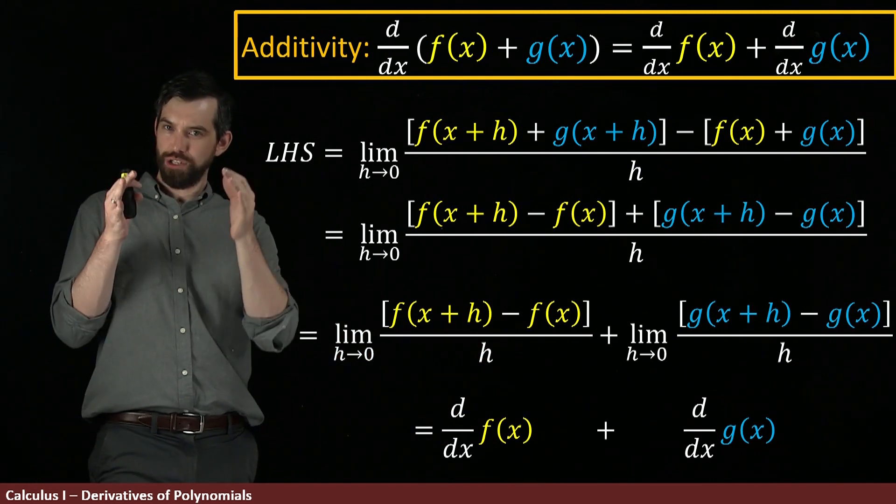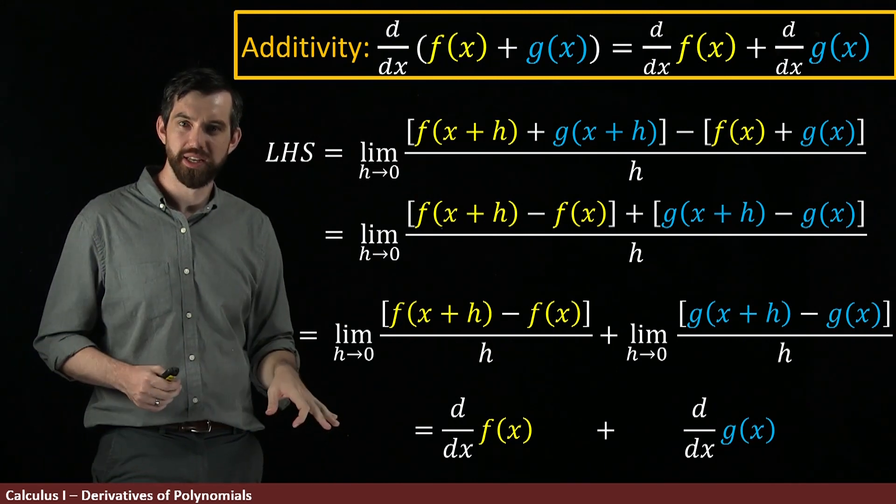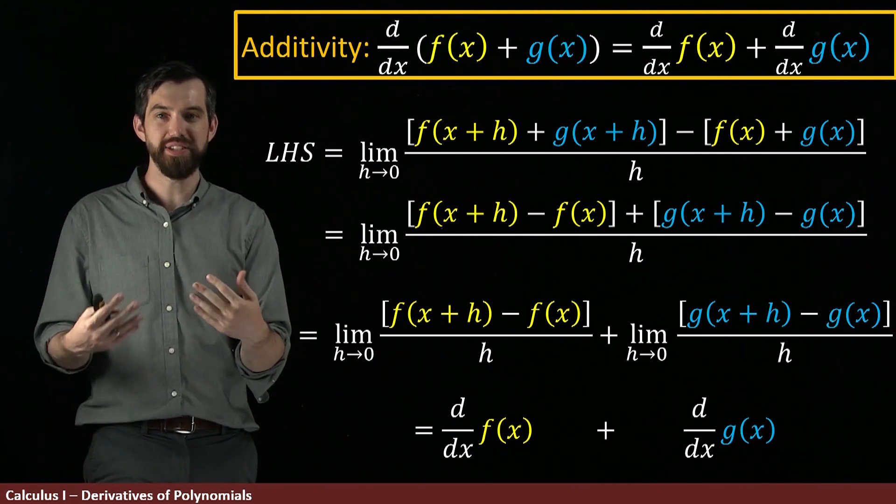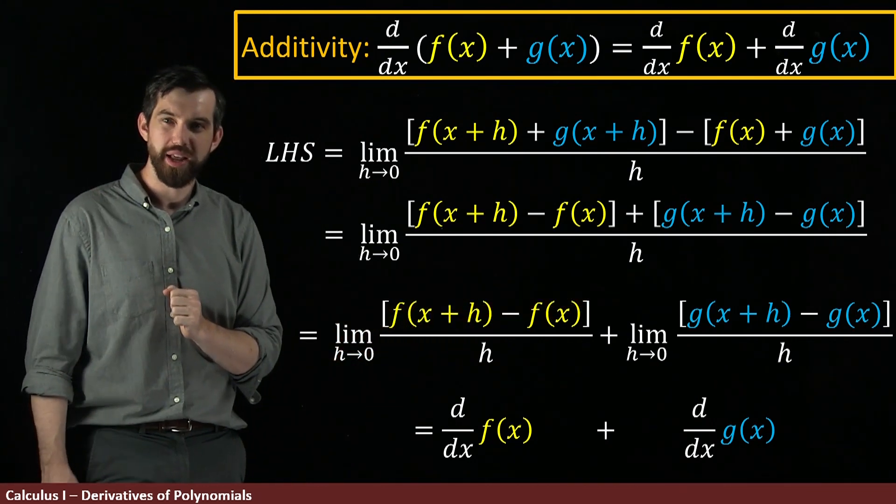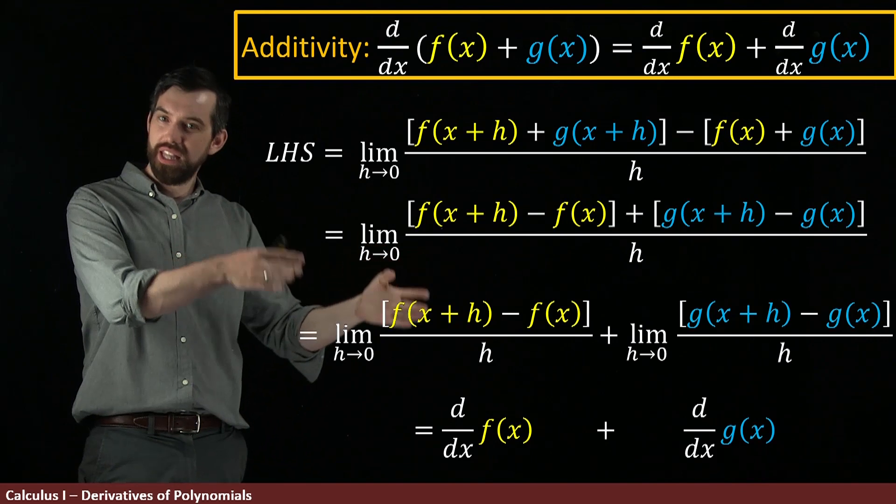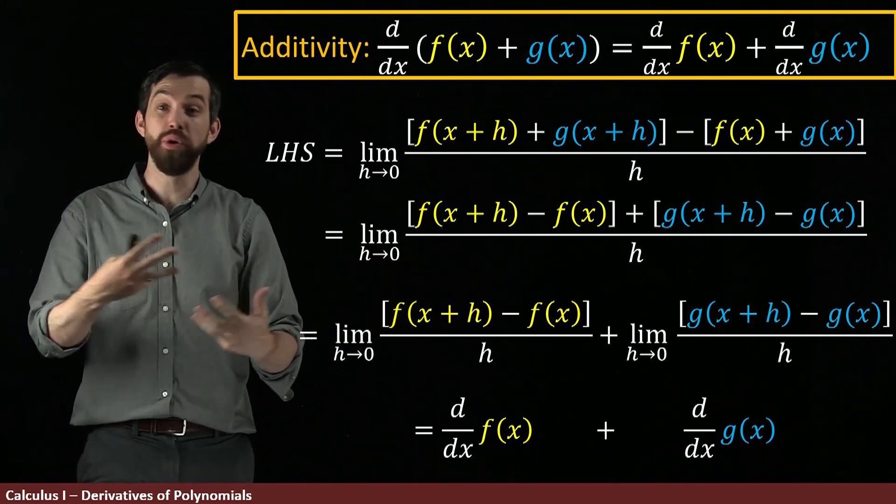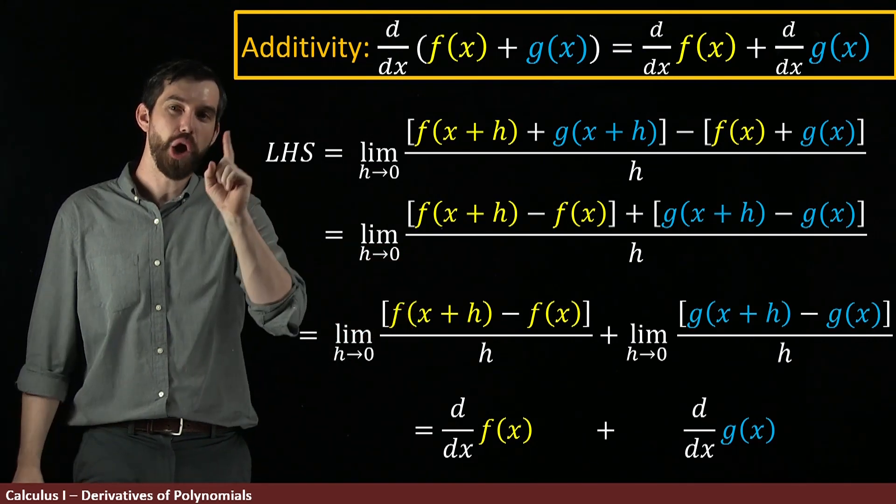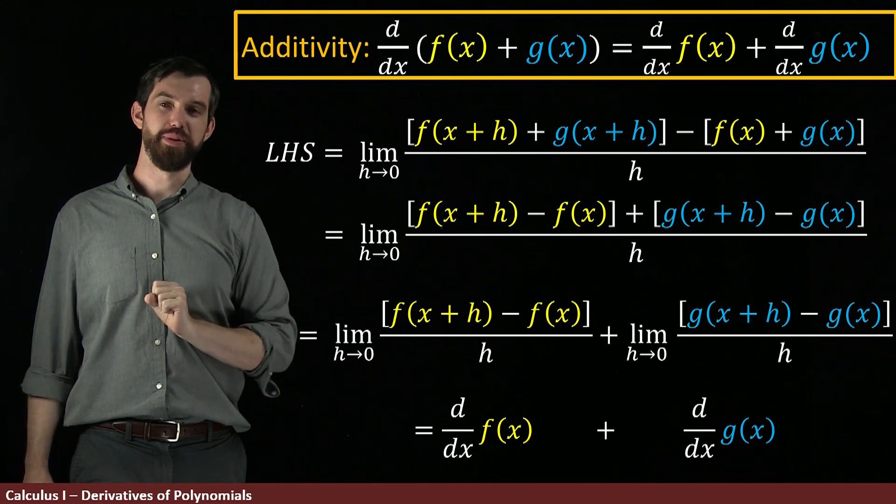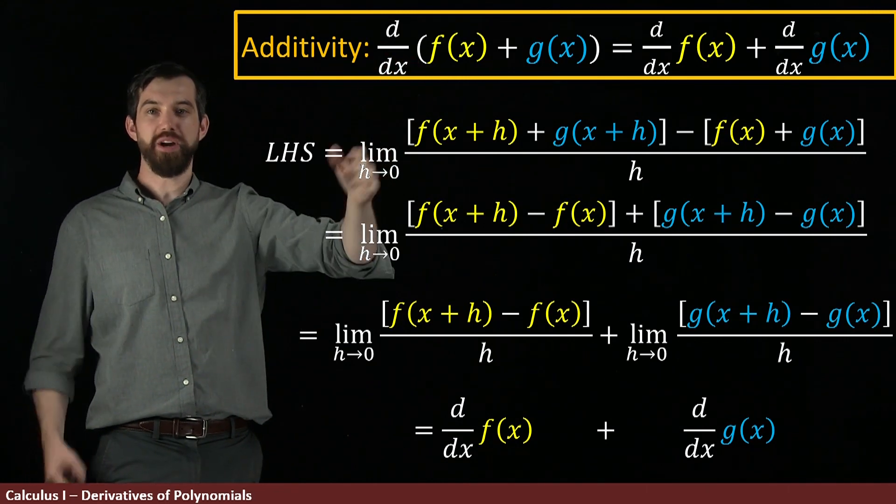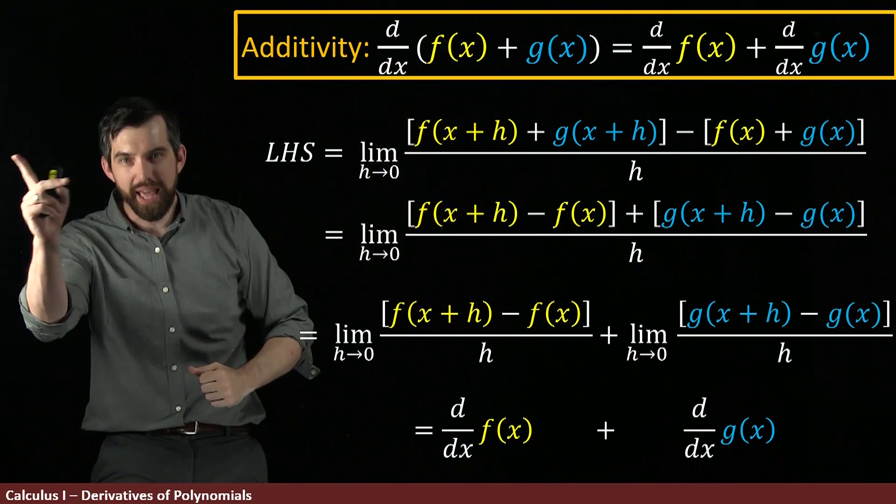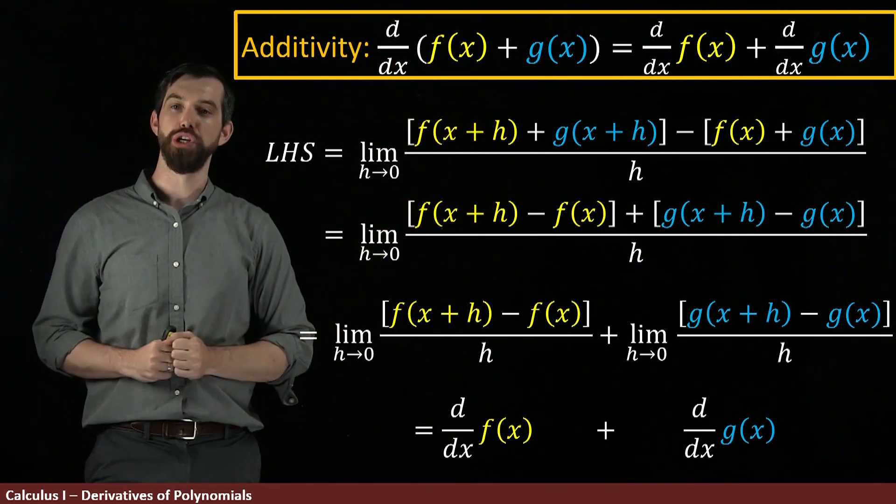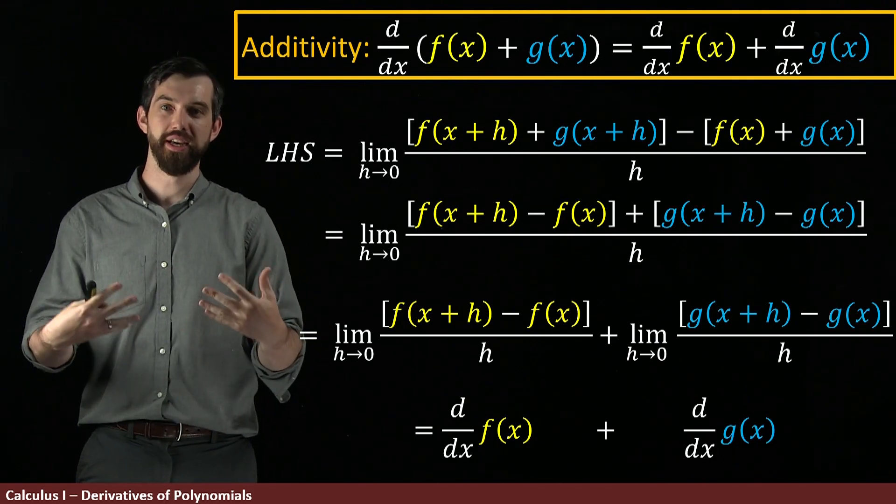Now, I should add as a caveat that as we've gone through this process, what we need to have is that both of these limits exist. Indeed, you might have recalled that the limit of a sum was the sum of the limits. I could distribute a limit through a sum, that is. But that only worked if those limits were defined. So, this additivity property is true—the derivative of the sum is the sum of the derivatives—if both of those two derivatives individually exist.